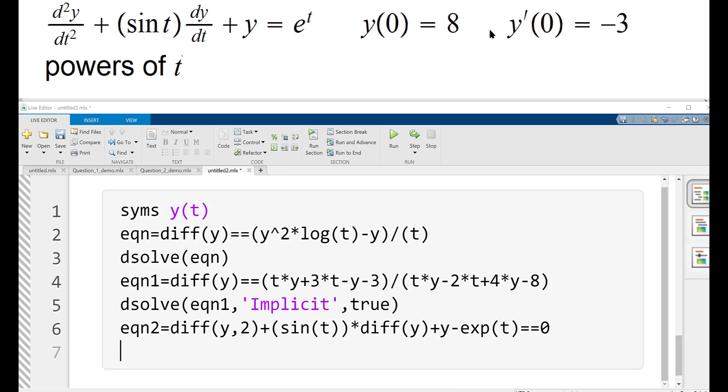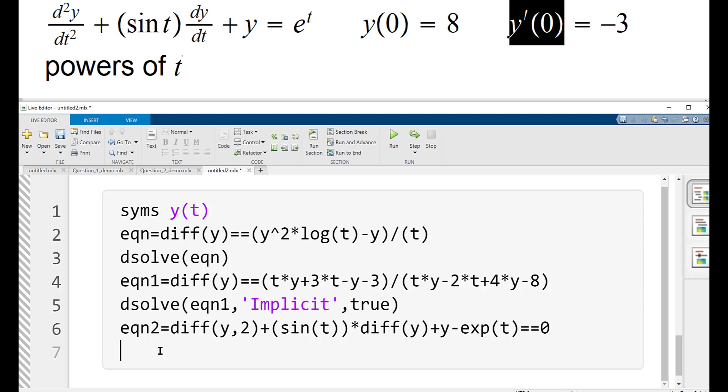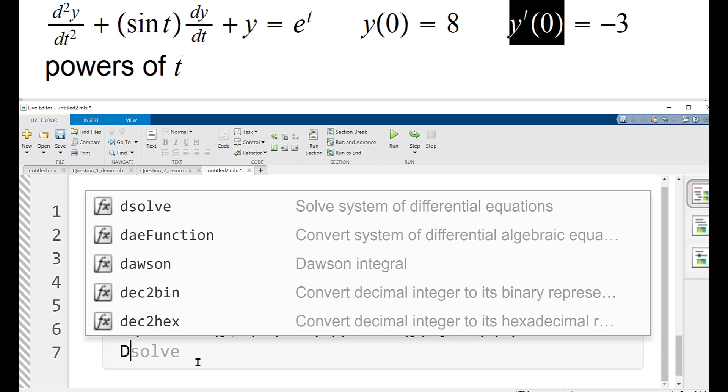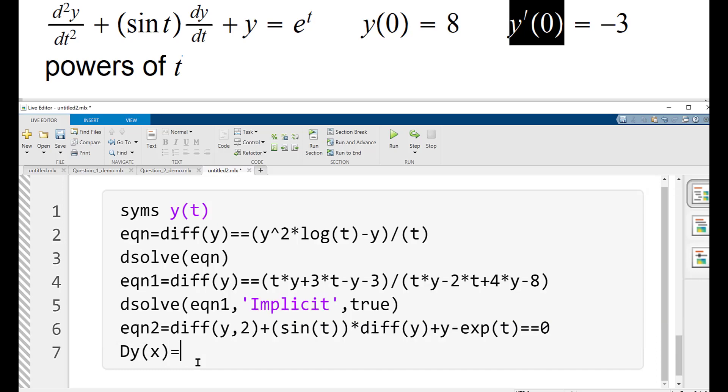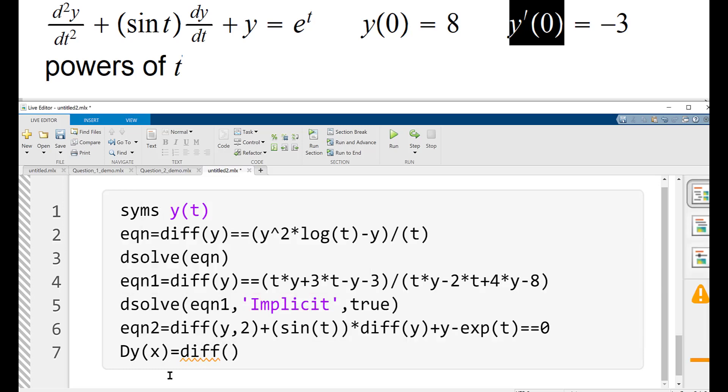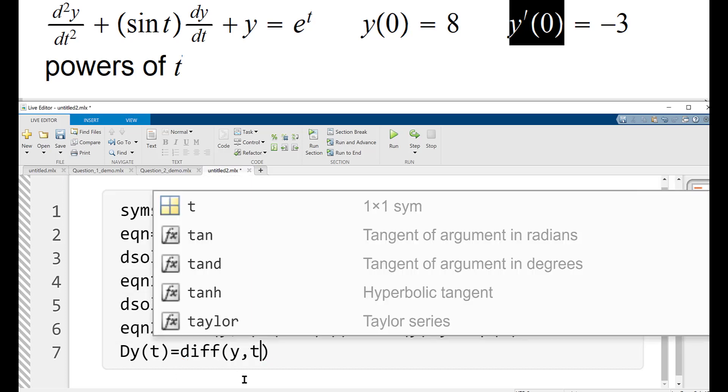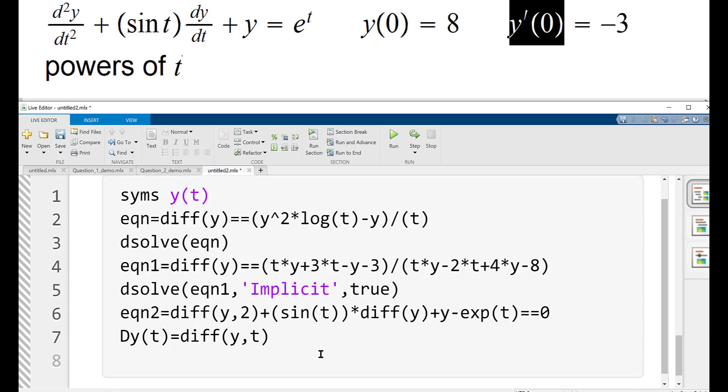So next what we have to do is, remember we have to put the initial conditions. So we have to define a y prime 0. So what we will do is this, that we shall just define dy as, or rather d of, or rather dy of t as, the differential. Not x, sorry. It's t, diff yt. We already had it there, but I just did it here. So this is what we define.